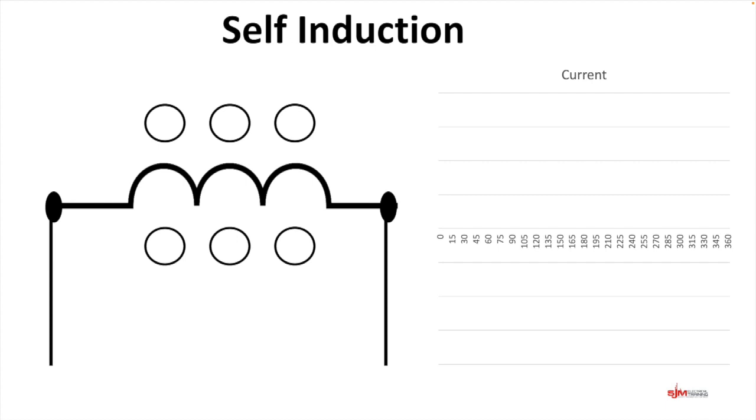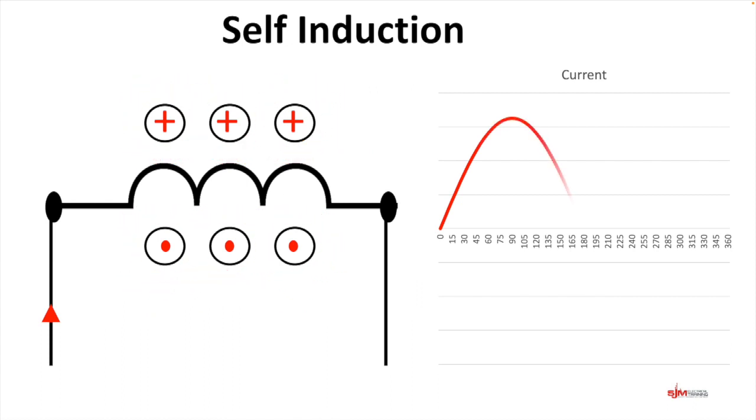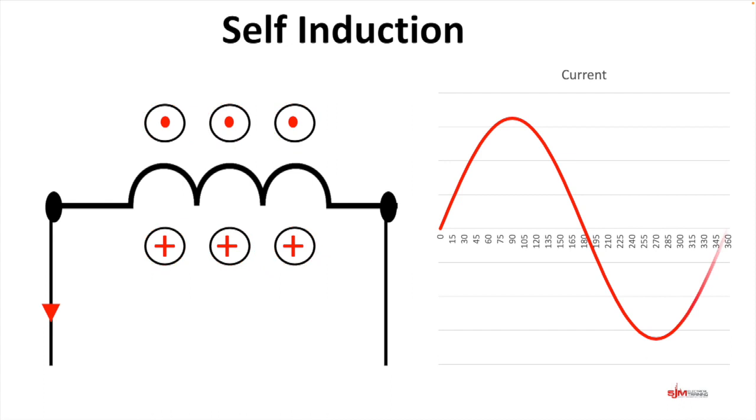And if we look at this end and we take it slowly, as the current goes up, the magnetic flux lines increase and then drop back down. And then on the negative half of the cycle, current changes direction, and the magnetic flux lines go from zero to maximum to zero.